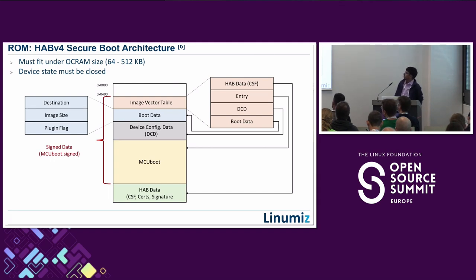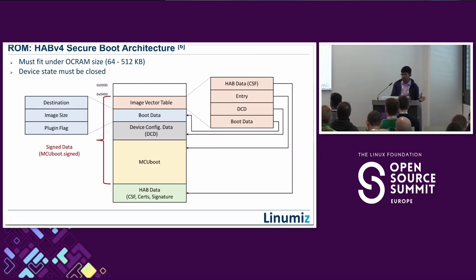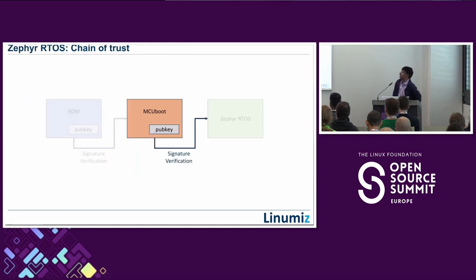There are a couple of recommendations to consider before choosing your SoC: the image lives in on-chip RAM during the boot sequence, so consider the RAM size — either choose a larger OCRAM SoC or compress/strip MCU boot to fit. Also, the device must be in closed state for production. You deploy development keys for development, but for production you use real release keys and close the device, making keys immutable and tamper-resistant.